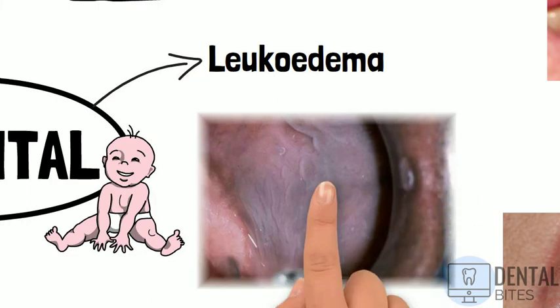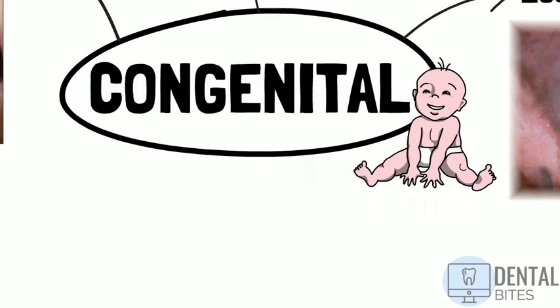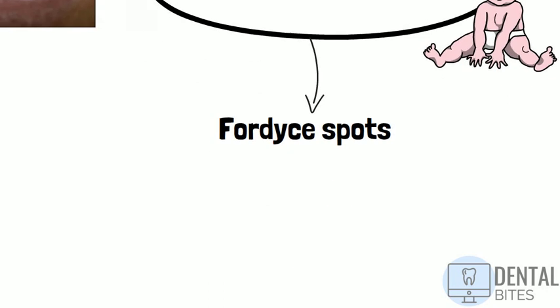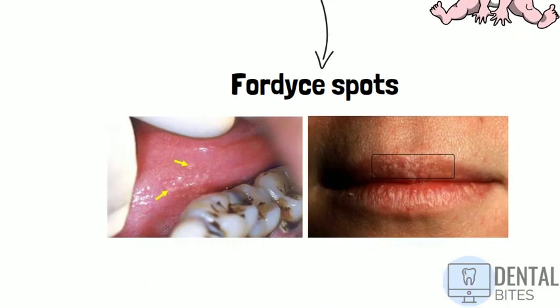Leukoedema is a common benign white or whitish-grey lesion seen especially in the buccal mucosa bilaterally in people of African or Asian descent. The white appearance disappears if the mucosa is stretched; the cause is unknown and no treatment is required. Lastly, Fordyce spots are a normal harmless finding — essentially a collection of sebaceous glands within the oral cavity, presenting as small slightly raised smooth yellow-white spots on the vermilion border of the lips and oral mucosa.